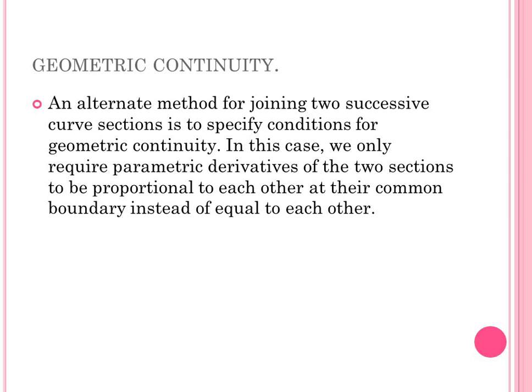There is also geometric continuity condition, an alternate method for joining two successive curve sections. Here we specify conditions for geometric continuity similarly to parametric continuity, but the difference is that we only require the parametric derivatives of two sections to be proportional to each other at their common boundary — not necessarily equal. Geometric continuity conditions are therefore a little more flexible compared to parametric continuity conditions.